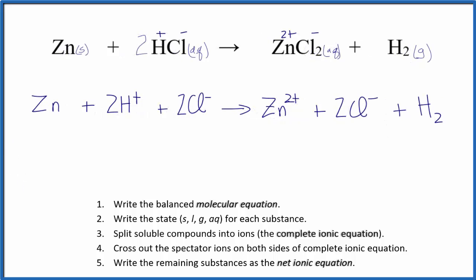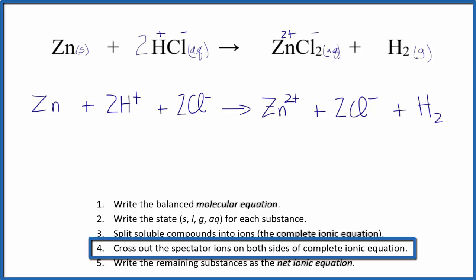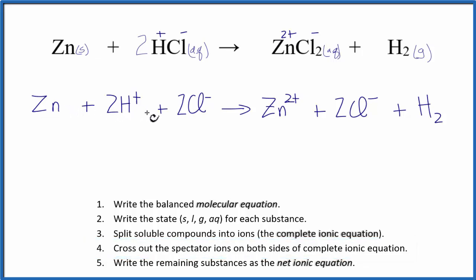So this is our complete ionic equation. Next we'll cross out the spectator ions, which appear on both sides of the equation. The only thing that's exactly the same is the 2 Cl minus.